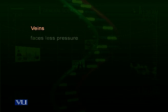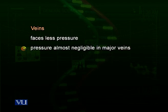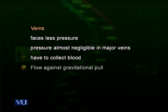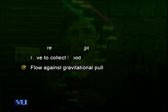Now we compare briefly the veins, arteries, and capillaries. Veins have minimum pressure — at least in major veins, the pressure is almost negligible. Veins have to collect blood from the body and return it to the heart. They also have to flow against the gravitational pull, which is very important. They have reduced pressure.